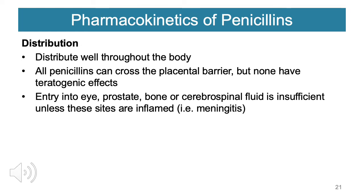Distribution is well throughout the body. All penicillins can cross the placental barrier, but none have teratogenic effects, meaning they do not produce malformations to the growing fetus — so they can be given safely to pregnant patients. Entry into the eye, prostate, bone, or CSF is insufficient unless these sites are inflamed, such as in meningitis. Penicillin can only cross the blood-brain barrier when the meninges is inflamed.